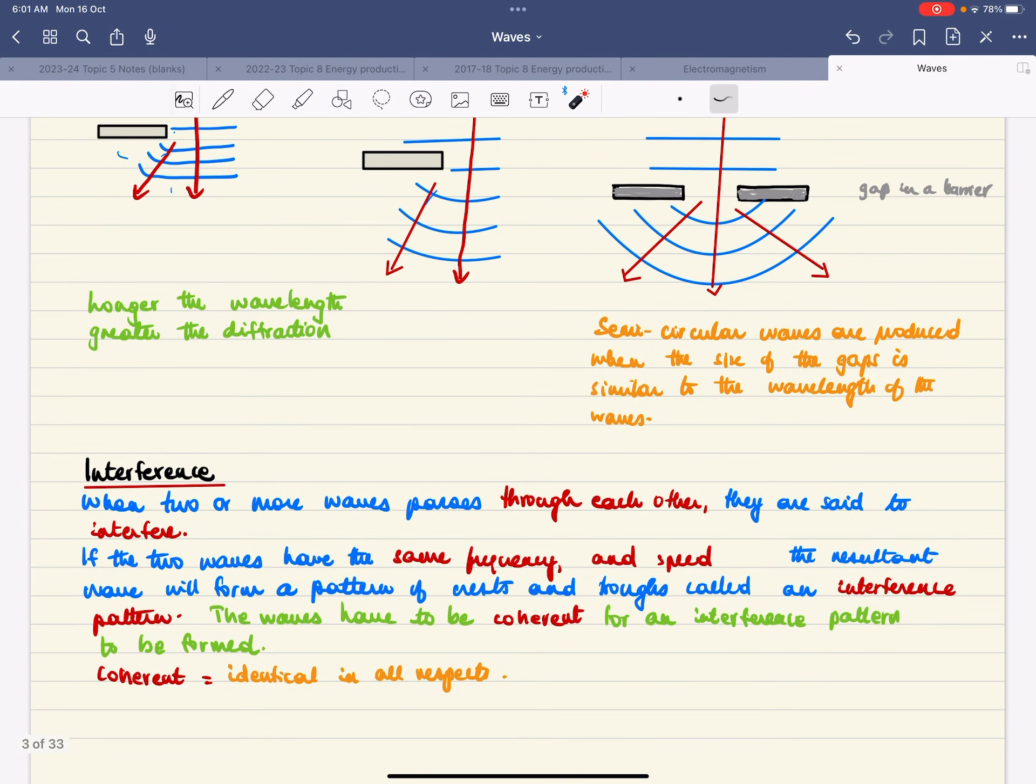Interference is when two or more waves pass through each other. They interfere. If they have the same frequency and speed, the resultant wave will form a pattern of crests and troughs as an interference pattern. And in order for this pattern to be formed, the waves have to be coherent, and the word coherent means they're identical in all respects.